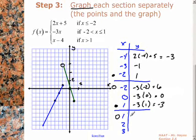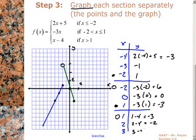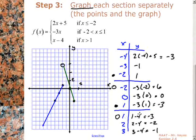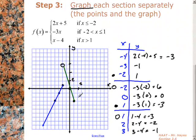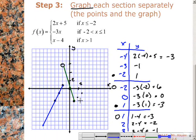For the third part, plug in the points: 1 minus 4 is negative 3. 2 minus 4 is negative 2. 3 minus 4 is negative 1. Notice that the pivot point here overlaps — 1 maps to negative 3 in both the second and third functions. So you don't have to draw an open circle there since the overlap is the same. We already have a point there, so we just plot 2 comma negative 2 and 3 comma negative 1, then graph the line.